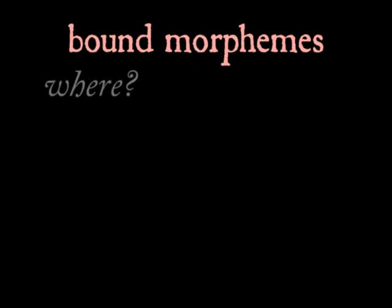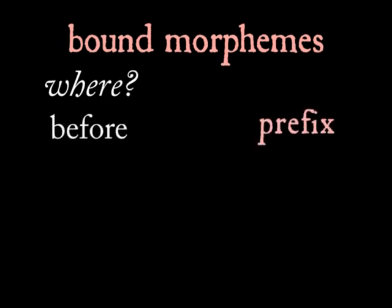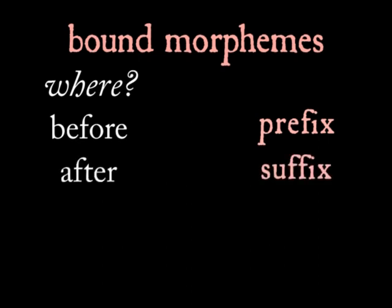Bound morphemes are generally bound in a fixed position with respect to the morphemes they're attaching to. Morphemes that attach before another morpheme are known as prefixes. Morphemes that occur after another morpheme are known as suffixes.